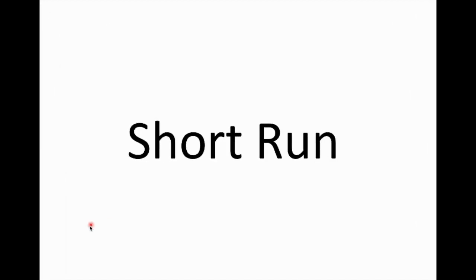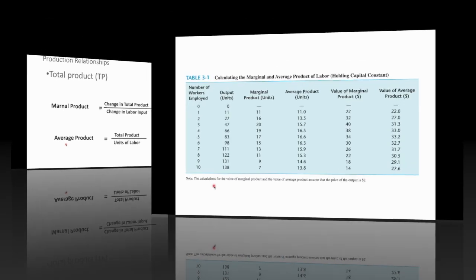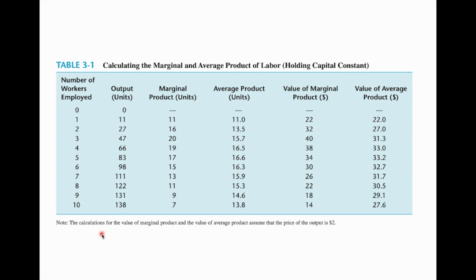Let's go into details about the short run production process. Here are some basic formulas — concepts you have learned in microeconomics: total product, marginal product, and average product. Looking at this table, in the first column we have the number of workers employed. Recall that in our production function, workers are the only variable inputs. We go from zero workers up to 10 workers.